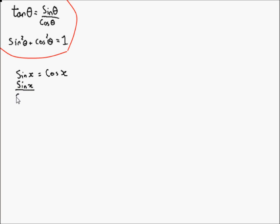I use x just because it's easier to draw than a theta. Over cos x equals 1, but hang on, we've got tan there, so we actually have tan x equal to 1.